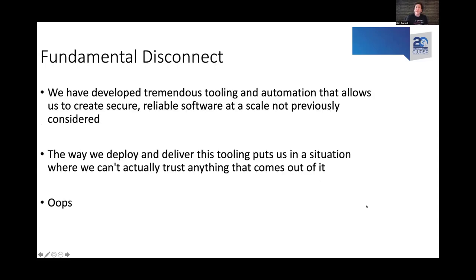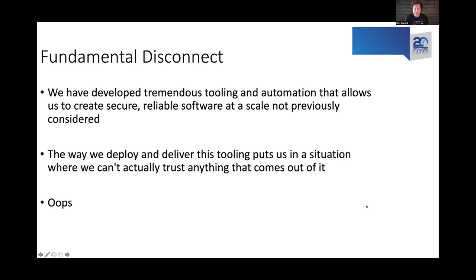There's a fundamental disconnect. Looking at the advances we've made — version control, static analysis for quality and security, unit testing, acceptance testing, code coverage — the tooling available now is so much better and easier to use than when I started my career in the mid-to-late 90s as a Java developer. We have amazing tools that should let us create secure, reliable software at unprecedented scale. The flip side is that the way we deploy and deliver this tooling puts us in a situation where you actually can't trust anything that comes out the other end.